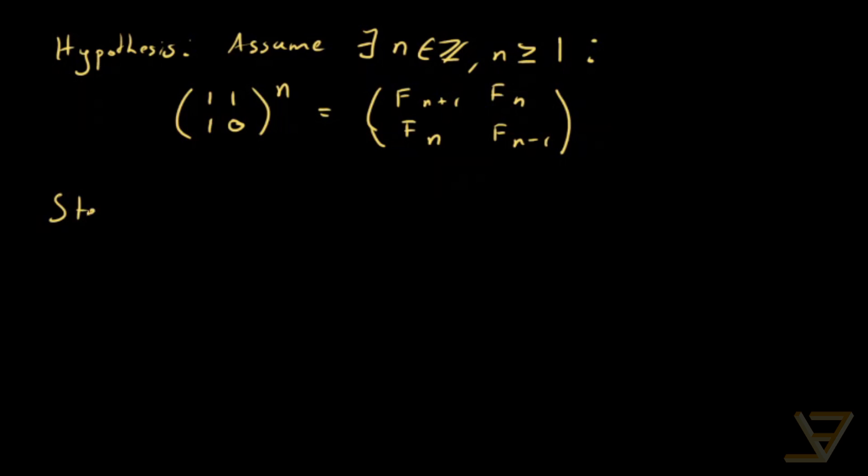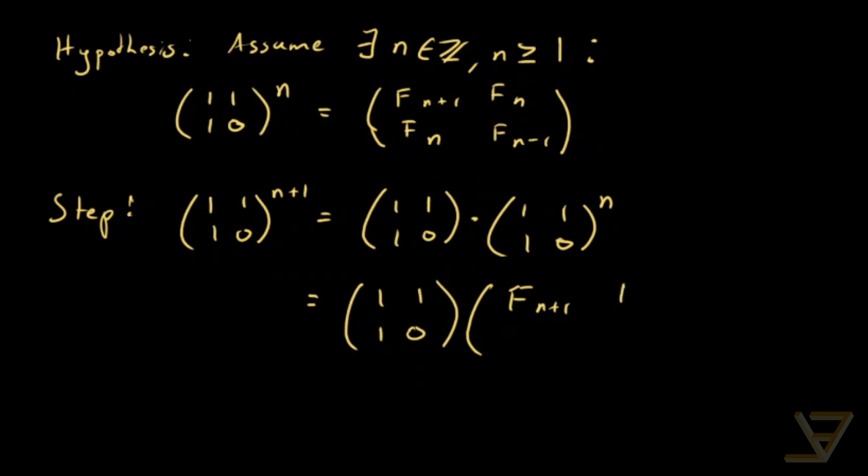Now we're going to go to the inductive step, where we look at [[1,1],[1,0]] to the n+1, and that's just [[1,1],[1,0]] to the n times [[1,1],[1,0]]. That is equal to, by the induction hypothesis, [[1,1],[1,0]] times [[Fn+1, Fn], [Fn, Fn-1]].